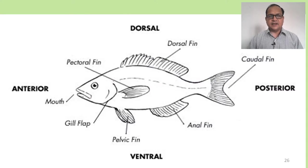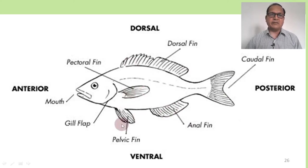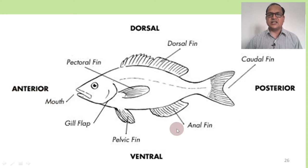In this figure, these are the dorsal, caudal, anal, and ventral fins. These are the unpaired fins, and pectoral and pelvic are the paired fins. This is the dorsal side, this is the ventral side, this is the posterior side, and this is the anterior side of a fish.